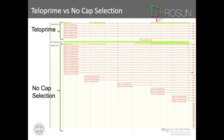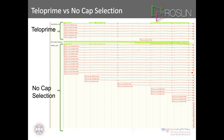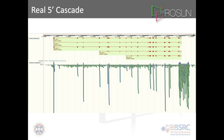Looking at sequencing efficiency: in the TelePrime library versus non-cap-selected, the non-cap-selected shows all these 5' cascading exon models representing degraded RNA. All of those degraded RNA reads are useless for transcriptome annotation because they don't represent a true transcript. Inversely, there are situations where you have real 5' cascades — as Ensembl predicts — that are real transcript models. Without cap selection you could never identify these, because they look just like a degraded product. With 5' cap selection, you have more assurance that this is a true transcription start site.